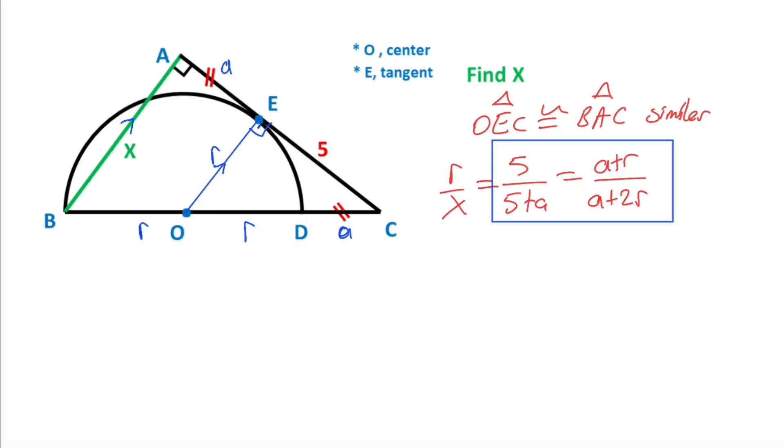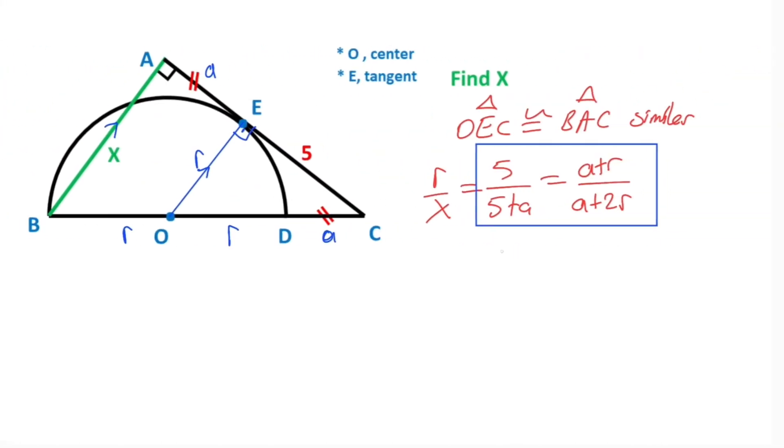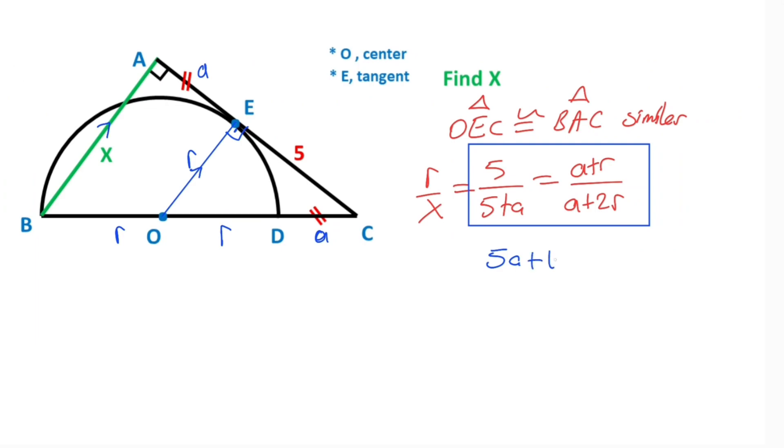If we use the right side of equation one, therefore 5 times (a + r) equals (5 + a)(a + 2r). So 5a plus 10r equals 5a plus 5r plus a squared plus ar. Therefore, 5r equals a squared plus ar.